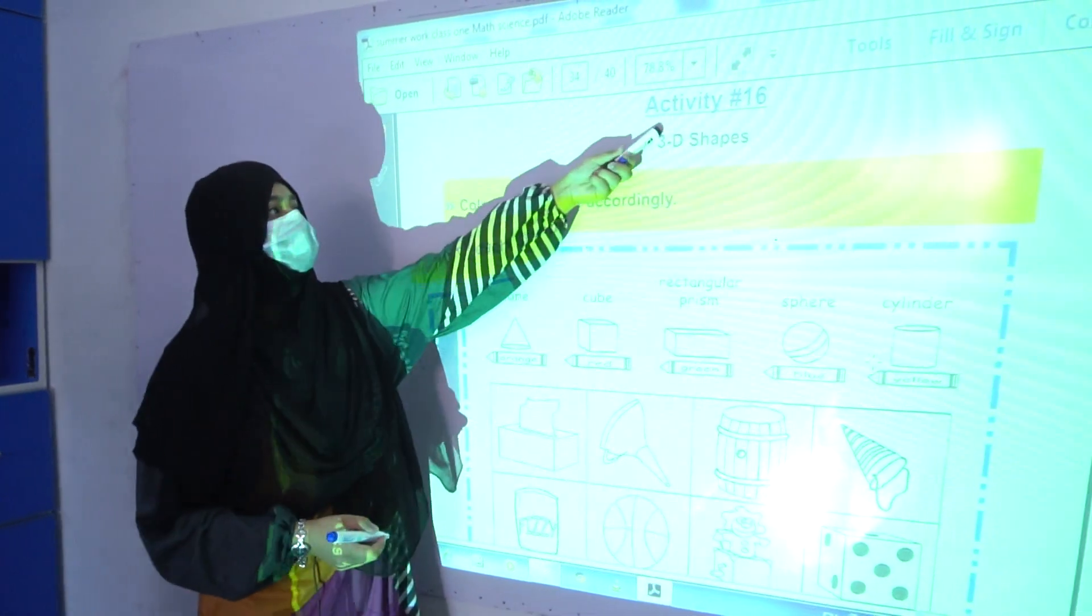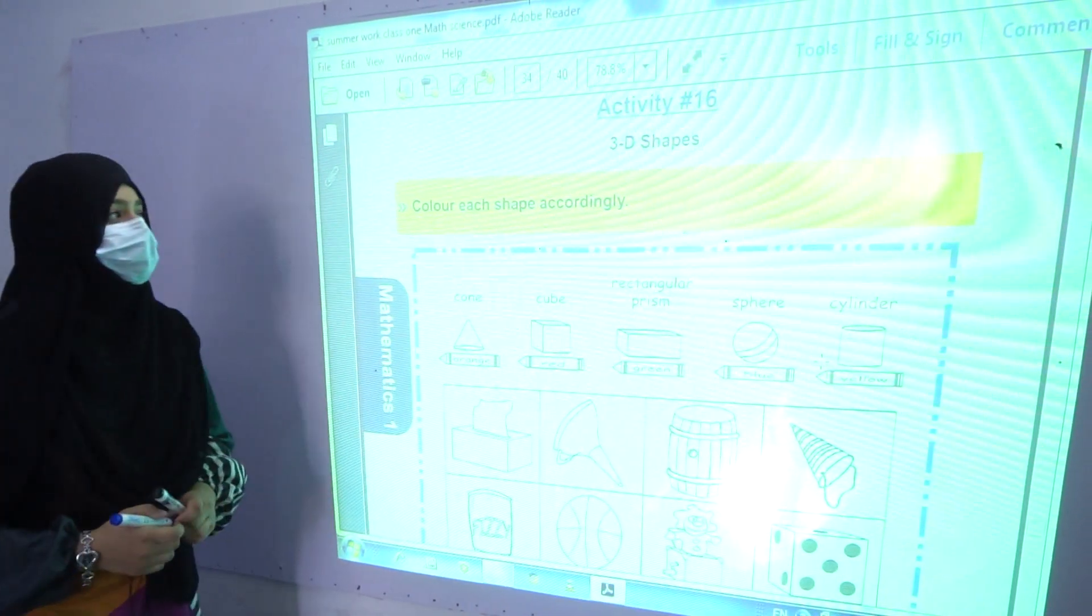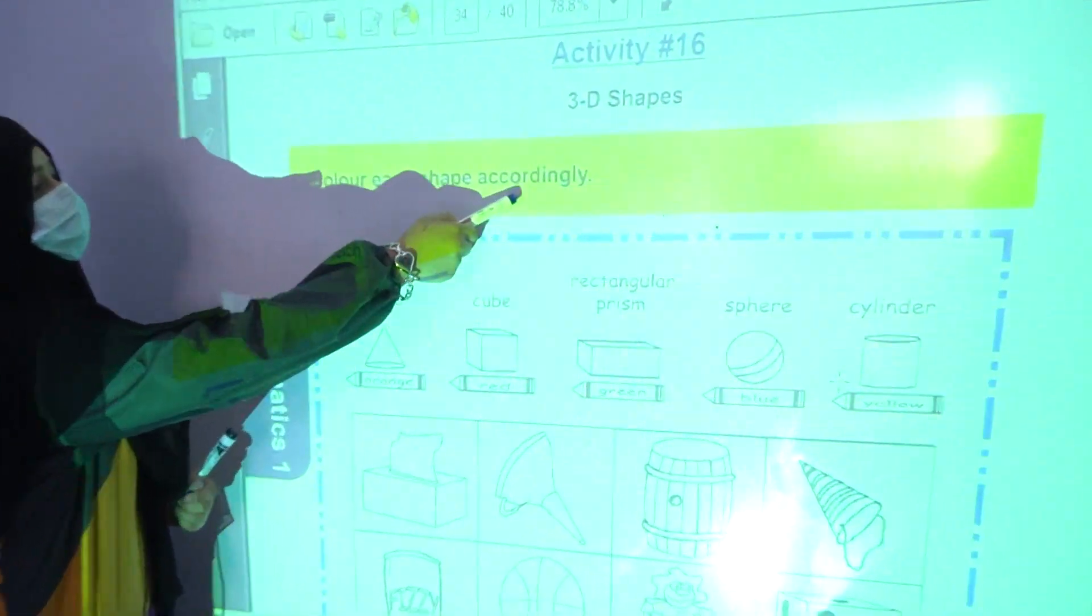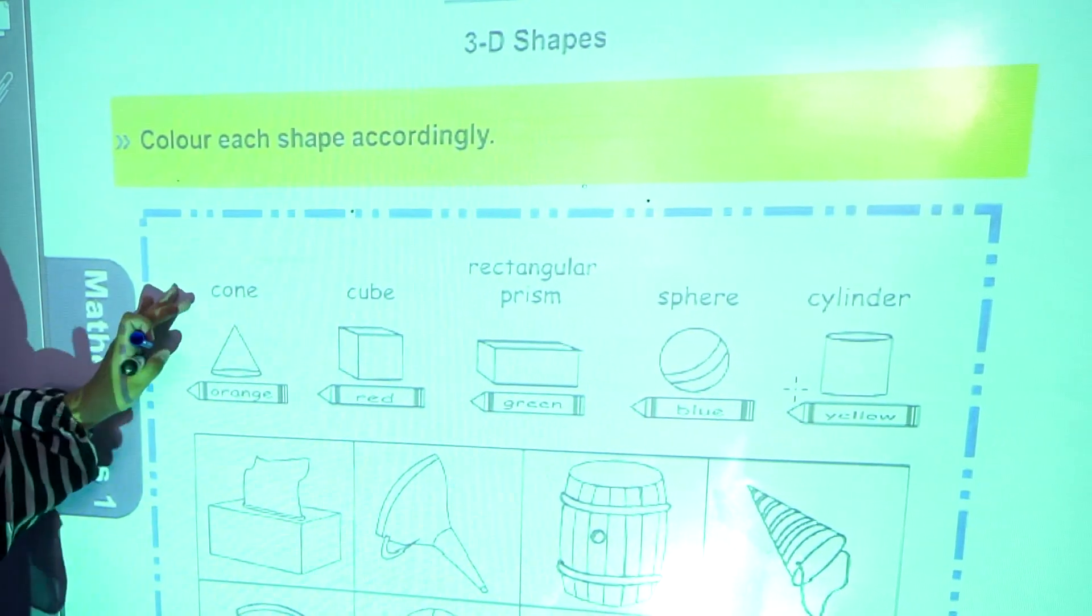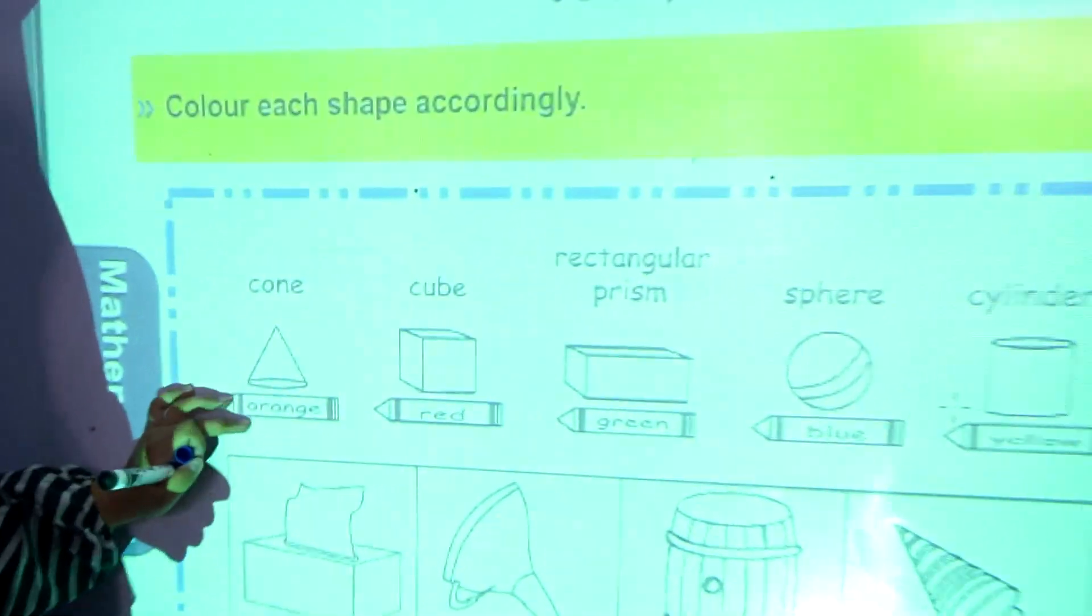Now we are going to start our activity number 16 which is about 3D shapes. Color each shape accordingly. For example, it is a cone, you have to color it orange.